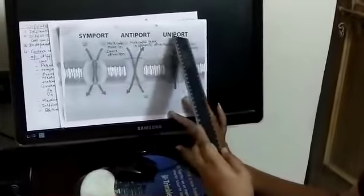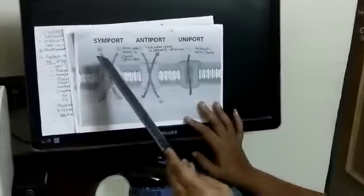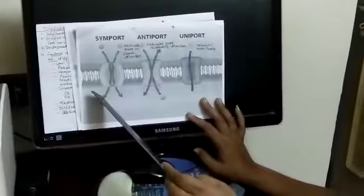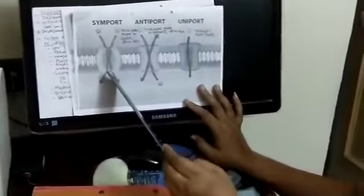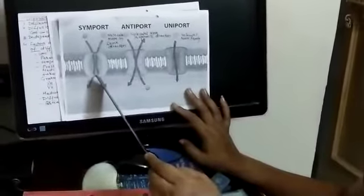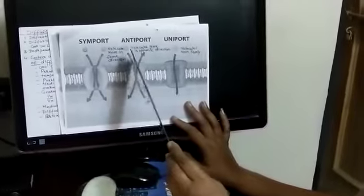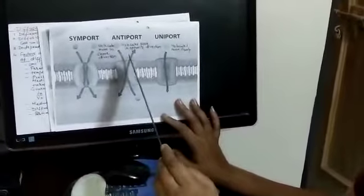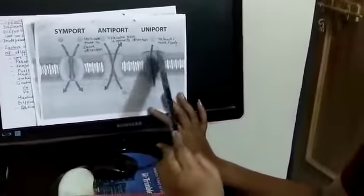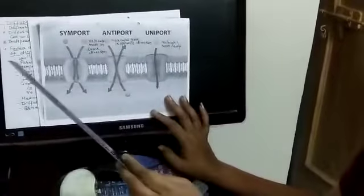So you got it. There are three types of movement of the molecules: symport, antiport and uniport. Symport, as the diagram indicates, in the same direction molecules move. Antiport: molecules in opposite direction move. And uniport: molecules freely move through protein channels.